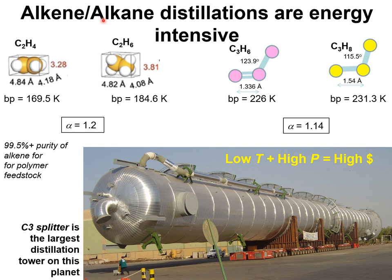The industrially important separation of alkene-alkane mixtures is currently carried out in distillation columns. For example, the separation of ethene from ethane has boiling points relatively close to each other, and the relative volatility alpha is about 1.2. For the separation of propylene from propane, the boiling point differences are about 5 degrees Kelvin and the relative volatility is only 1.14.